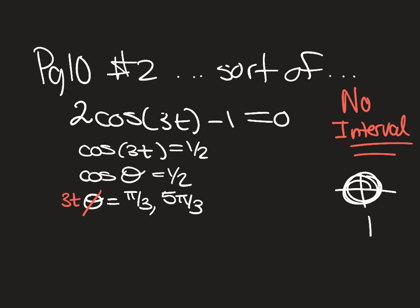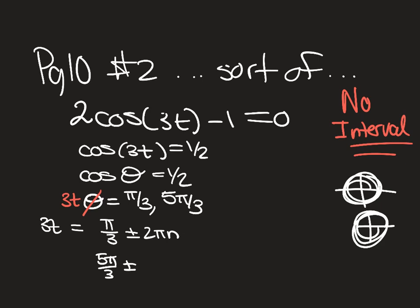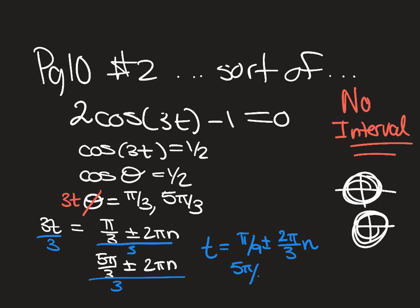So 3t equals π/3 ± 2πn (because cosine's period is 2π), and 5π/3 ± 2πn. When you divide by the 3 out front, you divide the entire expression — the whole thing — so t equals π/9 ± (2π/3)n. When there's no interval, it's a bit less work, but you must include the n term.